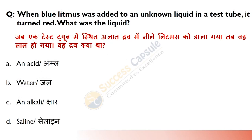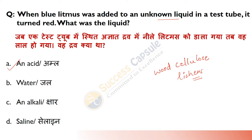Next: When blue litmus was added to an unknown liquid in a test tube, it turned red — what was that liquid? It is clear that the liquid is acidic. Litmus paper is made of wood cellulose containing primarily lichens. Red litmus paper reacts to alkaline substances by turning blue, and when there is an acidic substance, its color turns red.